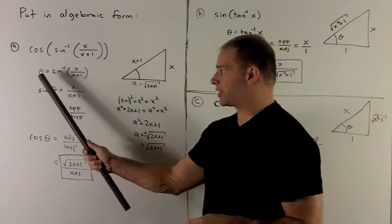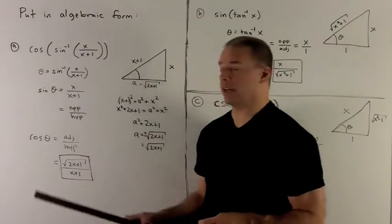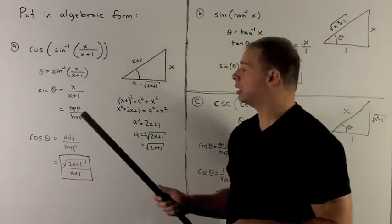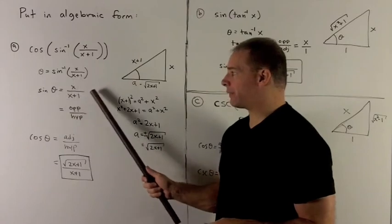So my first step is to give a name to the expression on the inside. So I'll call it theta since it'll be an angle. I move the sine inverse to the other side. And then I have a fraction here.